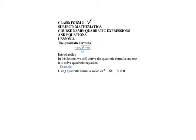The quadratic formula is given as x equals negative b plus or minus the square root of b squared minus 4ac, all divided by 2a. In this lesson, I will guide you in deriving the quadratic formula and using it to solve given quadratic equations.